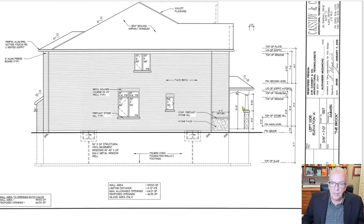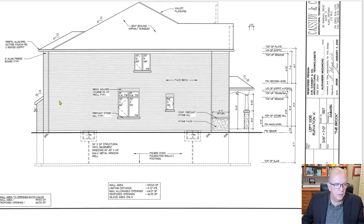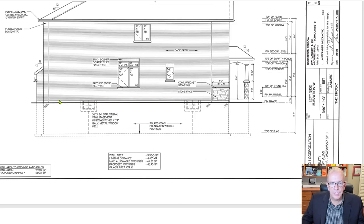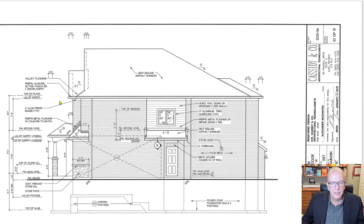Again, you can see different elevation heights provided at different points, so you'd know exactly how much this column is to come up and where you're going to put that cap — the stone cap, pre-cast concrete cap. So that's the left side.